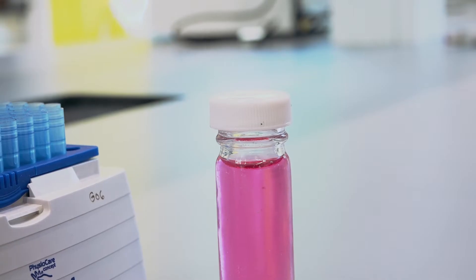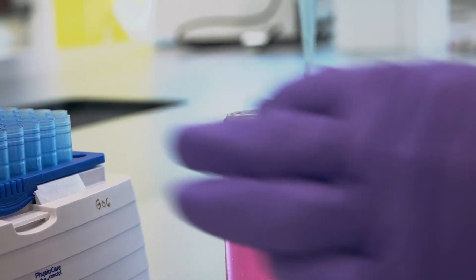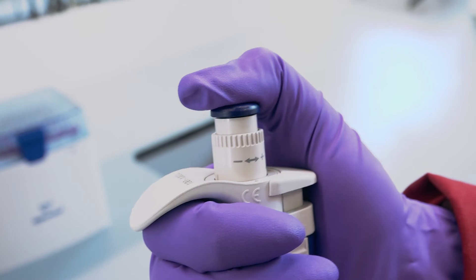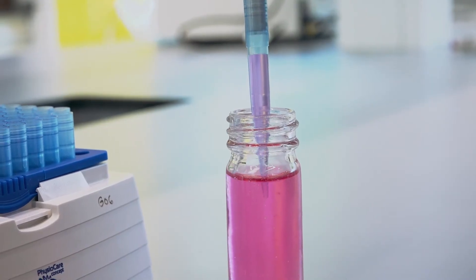Next, put your tip in at a vertical angle into the liquid you want to transfer. Do not immerse too much as this can cause you to draw up more liquid than you require. Slowly draw up your liquid until the plunger is fully released.